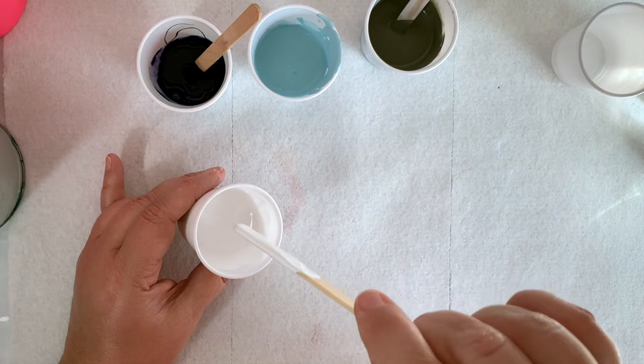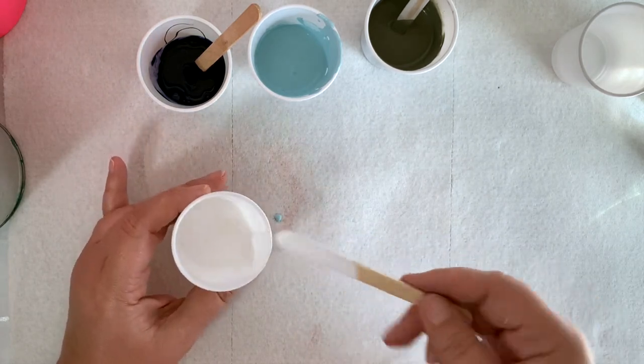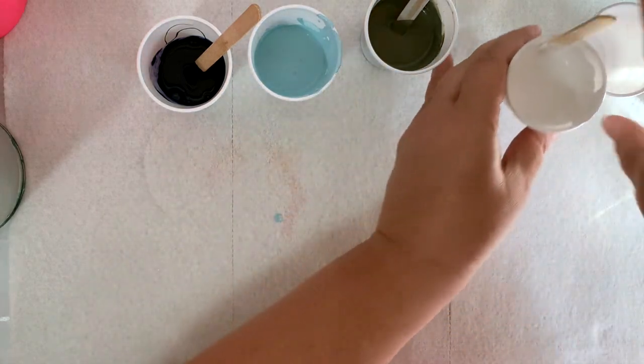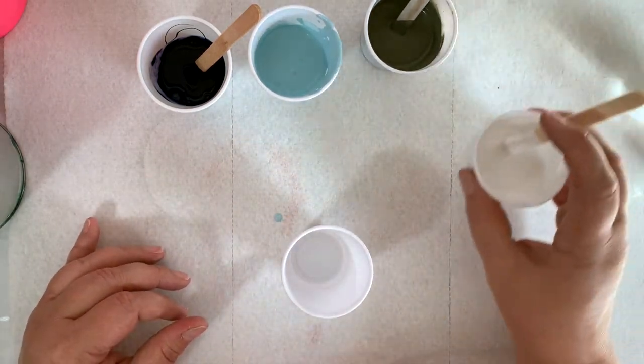Okay, now that we have them all mixed up, I'll take another small cup and I'll pour the colors into it one by one kind of layering the colors. It's what's called a dirty pour.